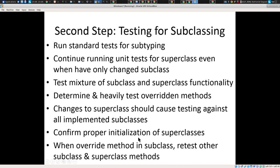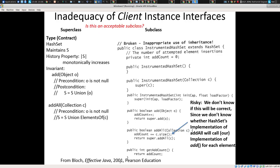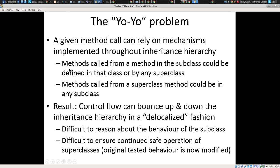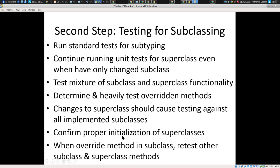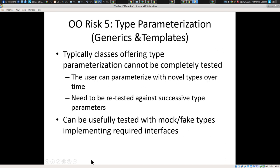I mentioned proper initialization of superclasses as a specific risk. Where is initialization going on here? The subclass constructor is calling the super constructor, delegating to the constructor of the HashSet. If you forget to do this, the superclass is not properly initialized. So confirming the superclass functionality is sane in an instance of the subclass is really valuable. When you override methods in the subclass, retest the methods in both the super and subclass.